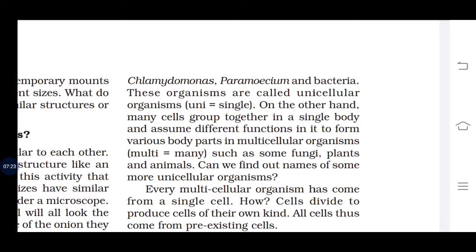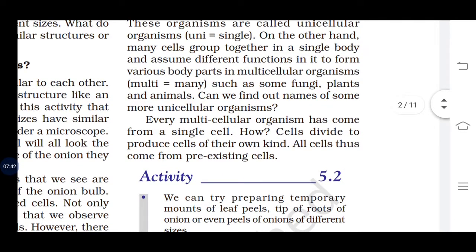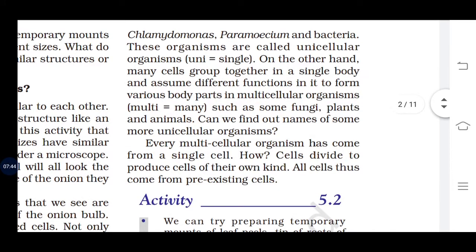On the other hand, many cells grouped together assume different functions in various body parts of the multicellular organism. We call organisms with multiple cells multicellular organisms. Examples of multicellular organisms include some fungi, plants, and animals. Examples of unicellular organisms include Chlamydomonas, Amoeba, Paramecium, and Bacteria.